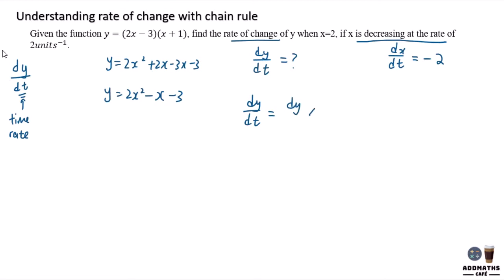So you are required to find dy/dt. Use the chain rule method: separate them into two, dy/dx times dx/dt. You need to find dy/dx, so differentiating gives 4x minus 1.